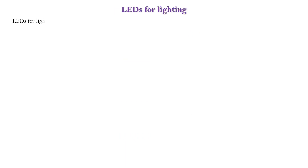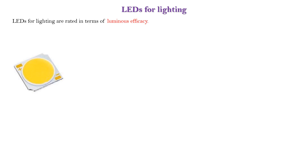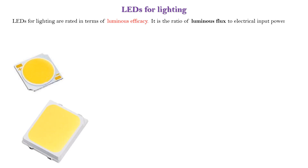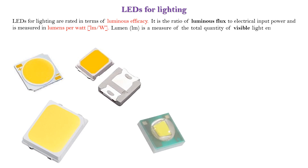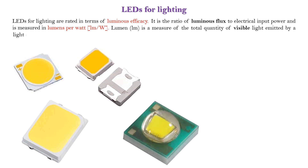LEDs for lighting are rated in terms of luminous efficacy. It is the ratio of luminous flux to electrical input power and is measured in lumens per watt. Lumen is a measure of the total quantity of visible light emitted by a light source.